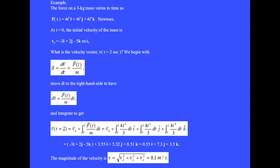We begin with a equals dv dt equals the force over the mass. Move the differential dt to the right-hand side to have dv equals F over m dt and integrate to get the vector velocity at t equals 2 equals the initial velocity vector plus the integral from t equals 0 to t equals 2 seconds of the force over the mass dt. The single integration of the vector force is equivalent to 3 integrations for each of the scalar components.